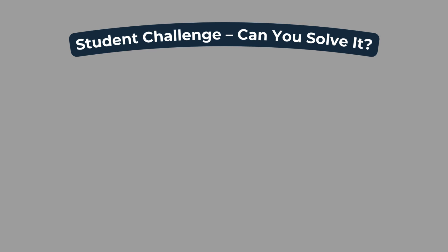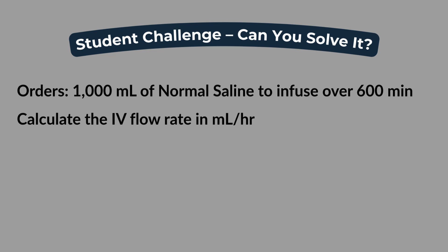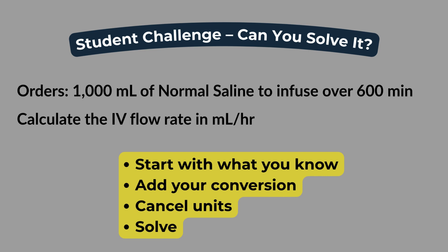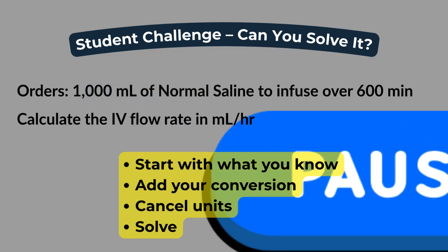Now it's your turn. Here's a challenge problem to see how well you can apply what you've practiced. The provider orders 1,000 milliliters of normal saline to infuse over 10 hours, but the time is listed in minutes — 600 minutes. Your job is to calculate the IV flow rate in milliliters per hour. Remember your four steps: start with what you know, add your conversion, cancel the units, and solve. Pause here and give it a try.